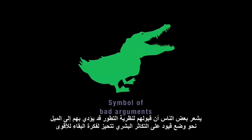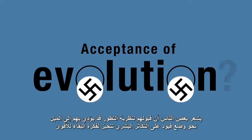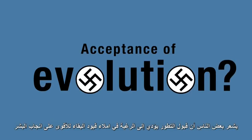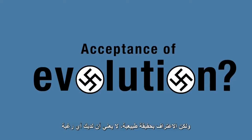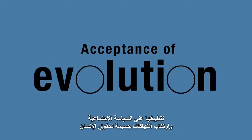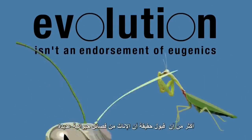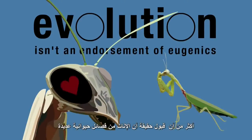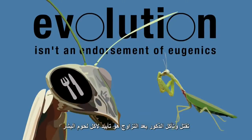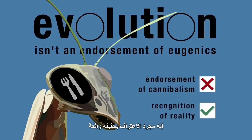Some people feel that an acceptance of evolution implies or leads inevitably towards the desire for supremacist control over the breeding of human beings. But recognising facts about nature doesn't mean you have any wish to apply them to social policy and commit gross violations of human rights. Evolution isn't an endorsement of eugenics, any more than accepting that females of numerous species kill and eat the males after mating is an endorsement of cannibalism. It's simply a recognition of reality.